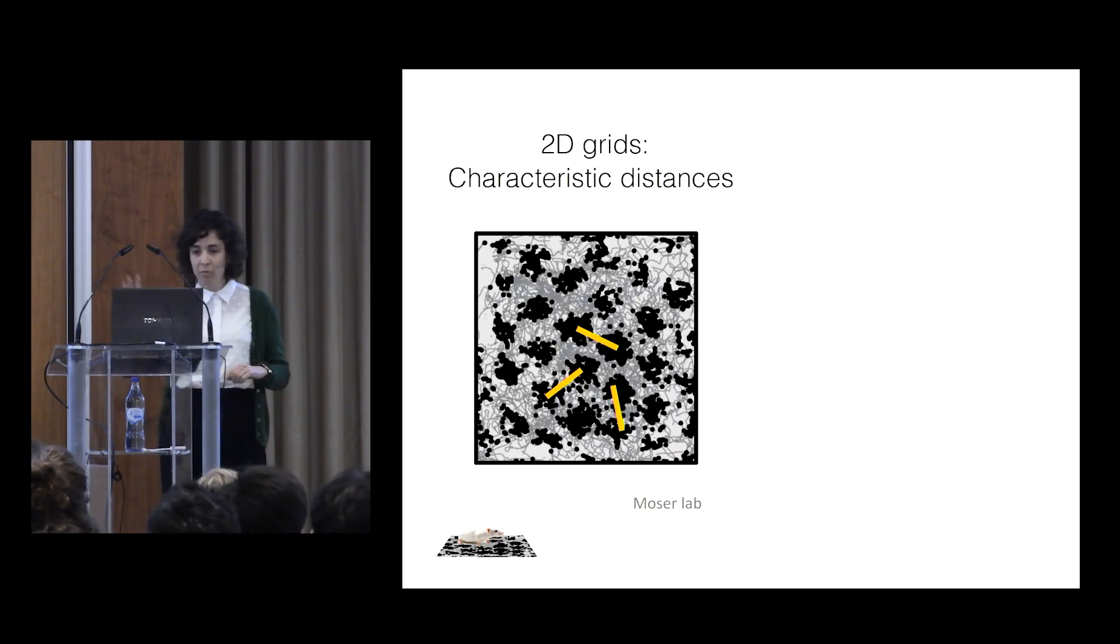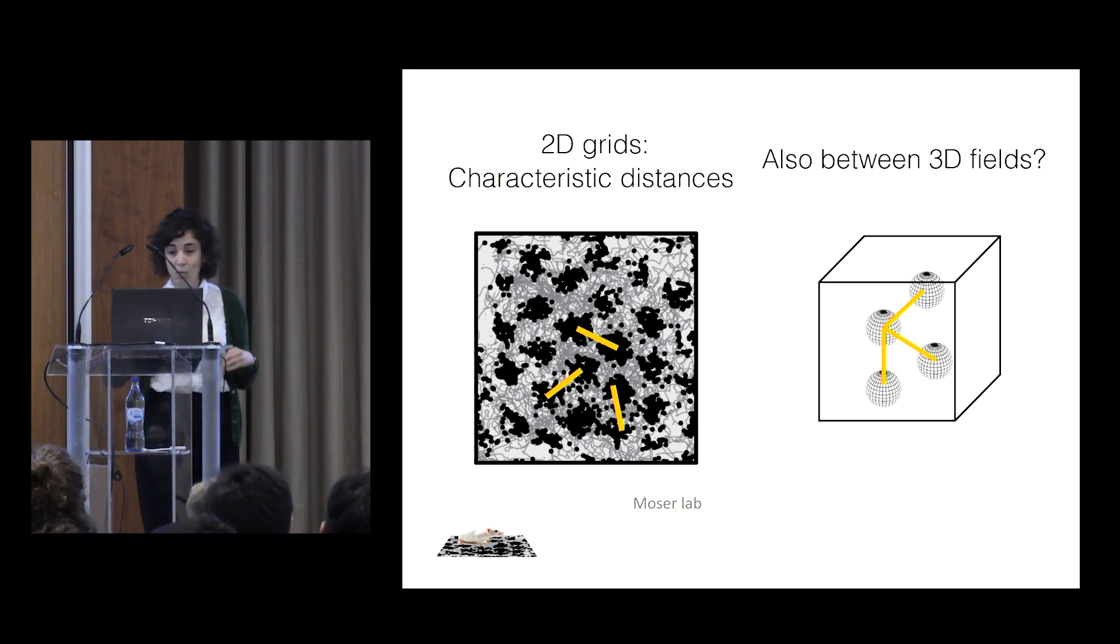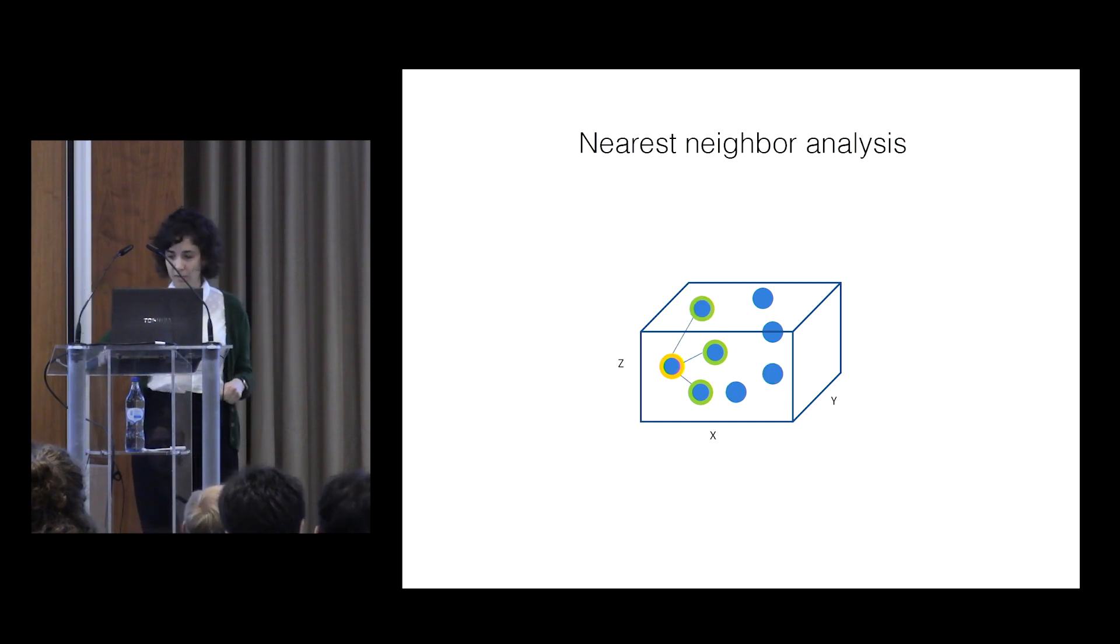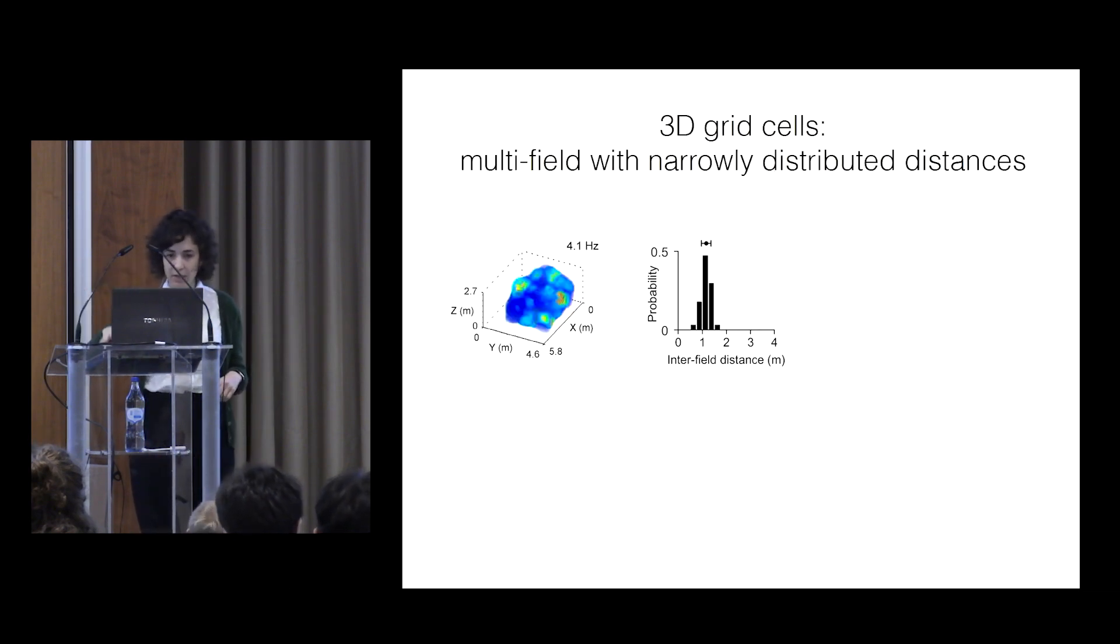Next property. 2D grid cells have this characteristic distance between neighboring fields. Would we see the same thing in 3D? So what we do is we measure the distance between each field and its three neighboring fields. And we do that to each of the fields.